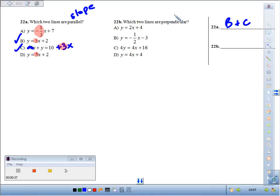Which two lines are perpendicular? Perpendicular if their slopes are opposite reciprocals. So let's identify the slopes first.